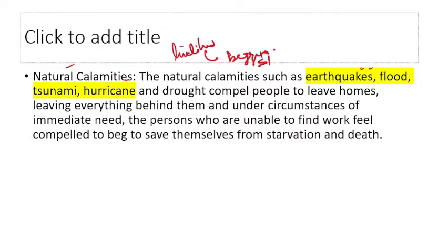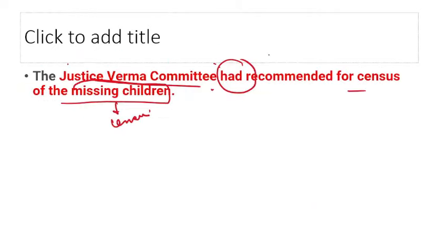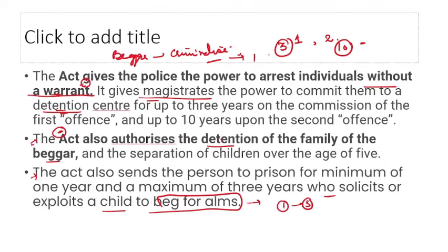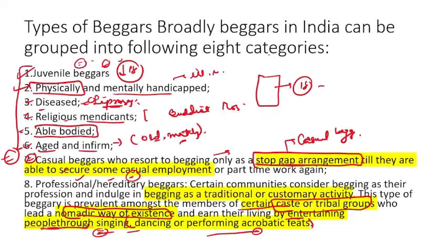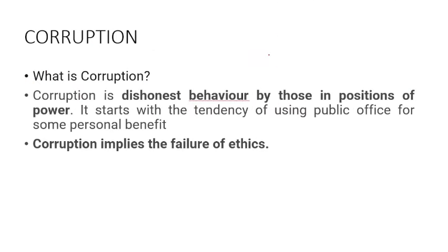Natural calamities like drought also force people into begging. To summarize beggary: important elements include the Bombay Prevention Act, West Bengal/UP/Bihar topping begging statistics, the Act criminalizing begging, types of begging, causes, and specific community names involved in hereditary begging.